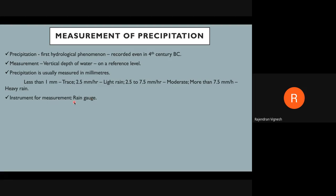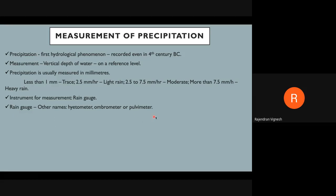Non-recording rain gauges were used mostly in earlier periods. Recording rain gauges are the more advanced type, using computing techniques. They are costly equipment that can be installed anywhere — they record data at a particular time and send it automatically. Most stations in India use recording gauges, except hill stations which use non-recording gauges.